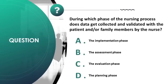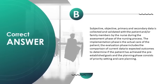During which phase of the nursing process does data get collected and validated with the patient and/or family members? A) implementation phase, B) assessment phase, C) evaluation phase, D) planning phase. Correct answer is B. Subjective, objective, primary, and secondary data is collected and validated with the patient and/or family members during the assessment phase of the nursing process.